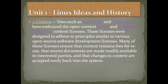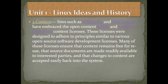The second area is content. Sites such as Wikipedia and Wiktionary, which don't need any introduction, have embraced the Open Content GFDL and Creative Commons content licenses. These licenses were designed to adhere to principles similar to open-source software development licenses. Many of these licenses ensure that content remains free for reuse and that source documents are made readily available. Basically, it means that anybody can write an article in Wikipedia or Wiktionary, anybody can contribute, someone else can add to it or update old information with new content and pictures — and they don't have to take permission from the original author.